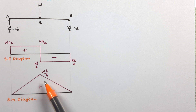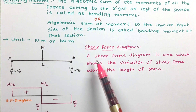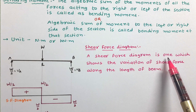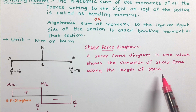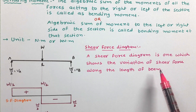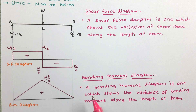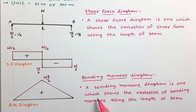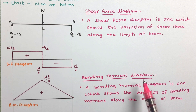So let us define shear force diagram and bending moment diagram. A shear force diagram is one which shows the variation of shear force along the length of the beam. Such a diagram, which depicts the variation of shear force across the length of the beam, is called the shear force diagram. A bending moment diagram is one which shows the variation of bending moment along the length of the beam — that is called the bending moment diagram.